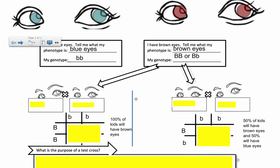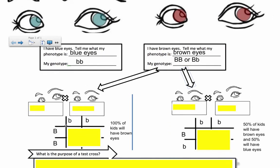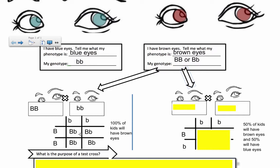So I do the cross and these are the possible outcomes I might predict. Let's take the first situation where I assume their genotype is big B big B. If they are big B big B and I cross them with a blue-eyed person who is little b little b, and separate out all the gametes - all four outcomes will be exactly the same and they will all be heterozygous big B little b. So 100% of the kids will have brown eyes if this person was homozygous dominant big B big B.